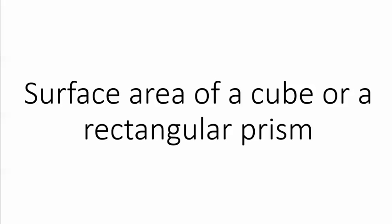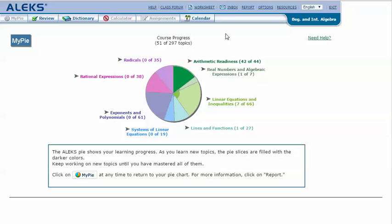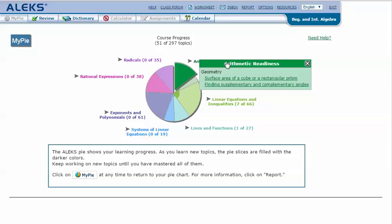Surface area of a cube or a rectangular prism. In your AlexPie, mouse over the green slice arithmetic readiness to reveal the drop-down list of topics you need to cover. Click on surface area of a cube or a rectangular prism.